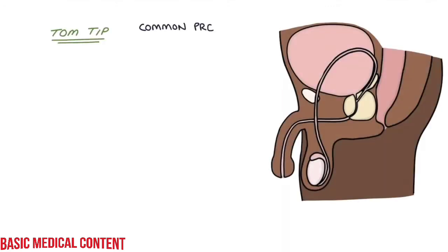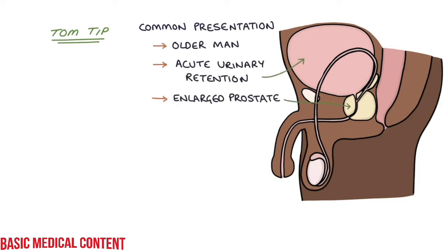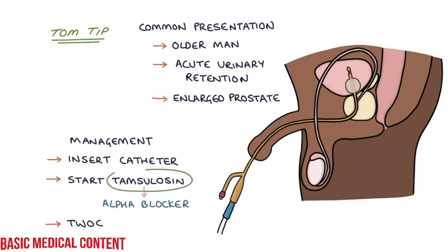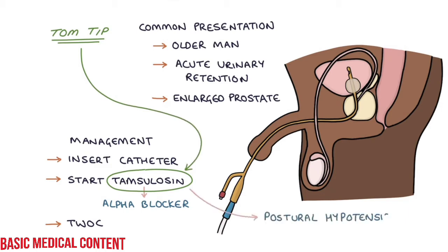A top tip: a common presentation requiring catheterisation is an older man presenting acutely with urinary retention due to an enlarged prostate. Typical management involves inserting a catheter, starting the patient on tamsulosin — which is an alpha blocker — and then discharging the patient to have a trial without a catheter, or TWOC, in the community. It's worth remembering tamsulosin for your exams, as they may give you this scenario and ask what medication should be started. The key side effect to remember with tamsulosin is postural hypotension, leading to dizziness on standing or falls.